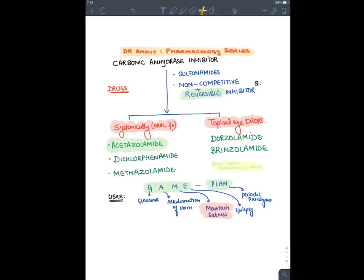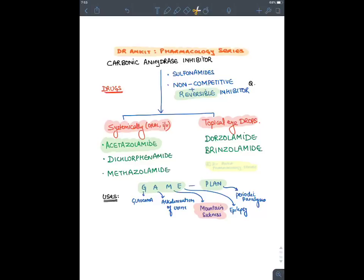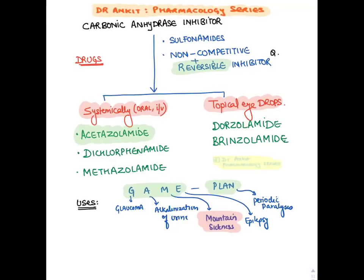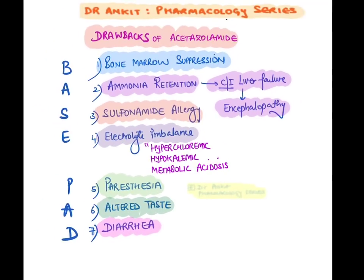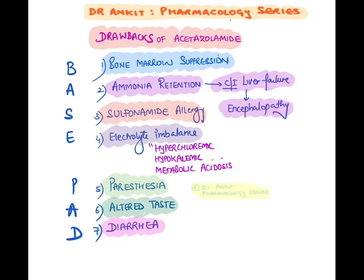Now let's start with carbonic anhydrase inhibitors. They are sulfonamides — that is why they all end with the word 'amide.' They are non-competitive reversible inhibitors. They are used in: glaucoma, alkalinization of urine, mountain sickness, epilepsy, and periodic paralysis (mnemonic: GAME PLAN). The drugs are acetazolamide, methazolamide, dorzolamide, and brinzolamide. Their side effects include bone marrow suppression — this is the only class of diuretic causing bone marrow suppression.